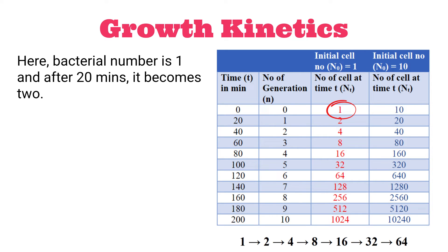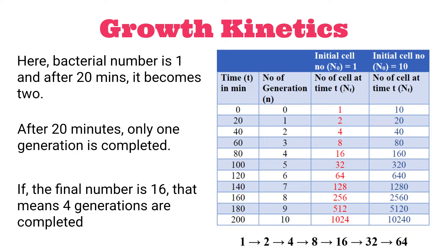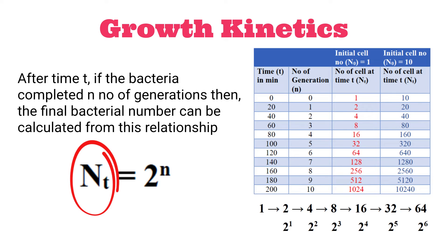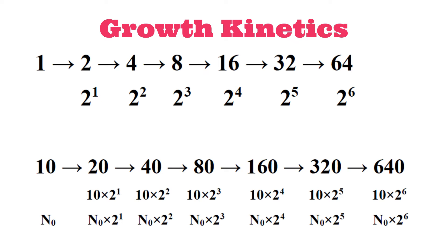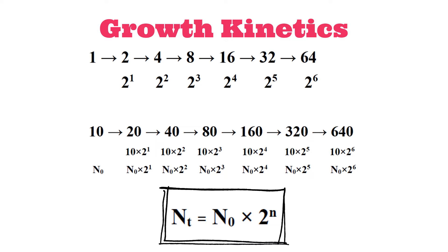Suppose the bacterial number is 1, and after 20 minutes it becomes 2 — meaning only one generation is completed. If the final bacterial number is 16, that means 4 generations have completed. Or we can say that after time t, if bacteria complete n number of generations, then the final bacterial number will be 2 to the power n. But if we start with 10 cells, it will be 20, then 40, then 80 — or simply, the final number of bacteria will be N₀ times 2 to the power n. If we know the final and initial bacterial number, we can easily calculate the number of generations completed using this relationship.